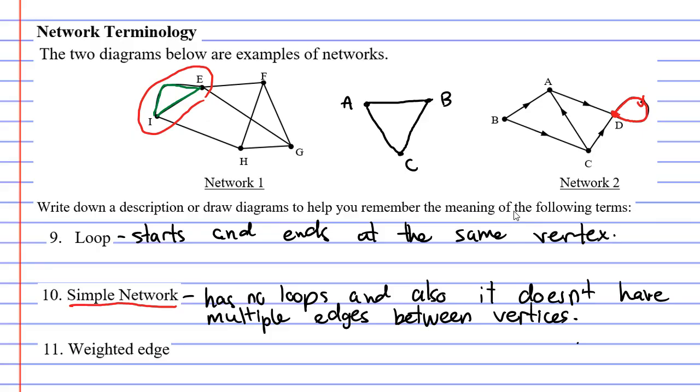If I wanted to change this one so it was not a simple network I could quite simply draw a second edge from A to B or I could draw a loop for vertex C and then it becomes a network that is not simple.